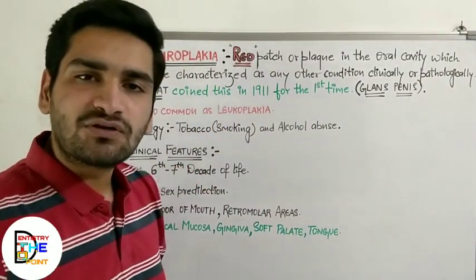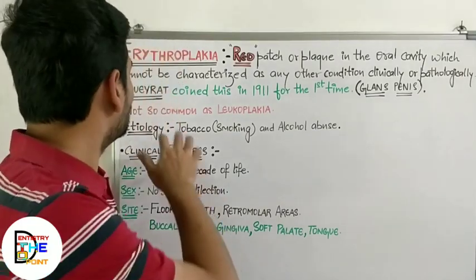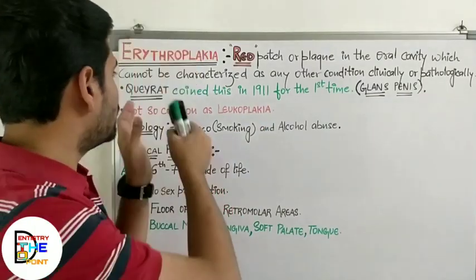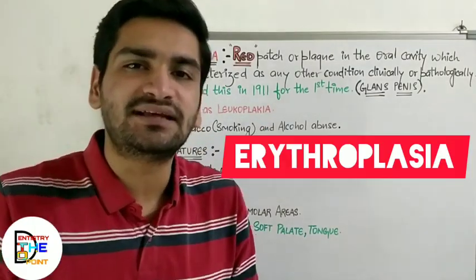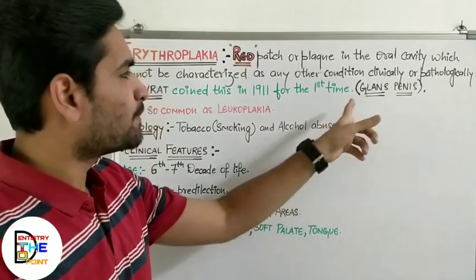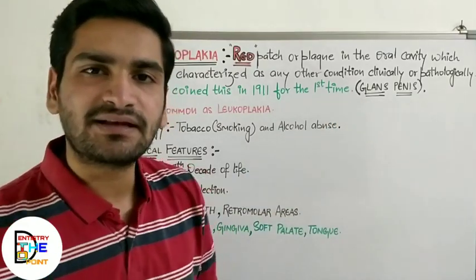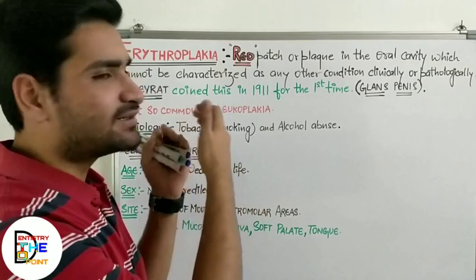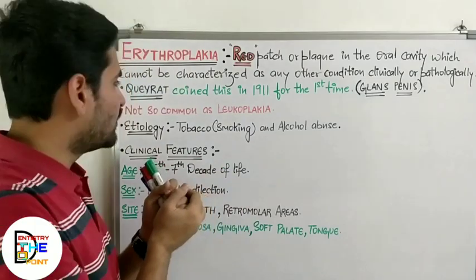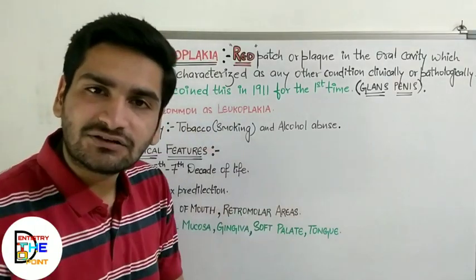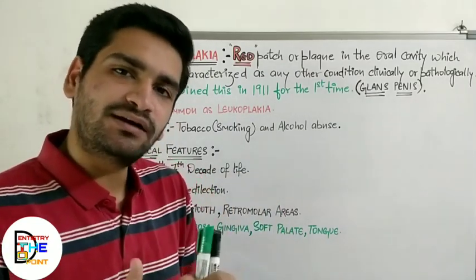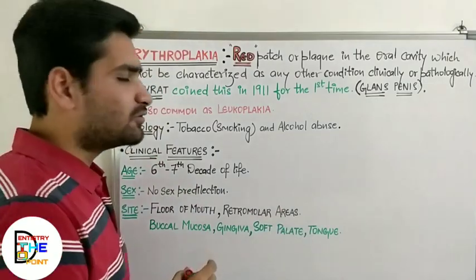The first one to coin this term was Queyrat in 1911, who used the term erythroplakia. He noticed the first case on the mucosa of the glans penis, and after that various cases were also seen in the oral mucous membranes. Erythroplakia is not as common as leukoplakia — leukoplakia is more common — but there are cases of erythroplakia as well.